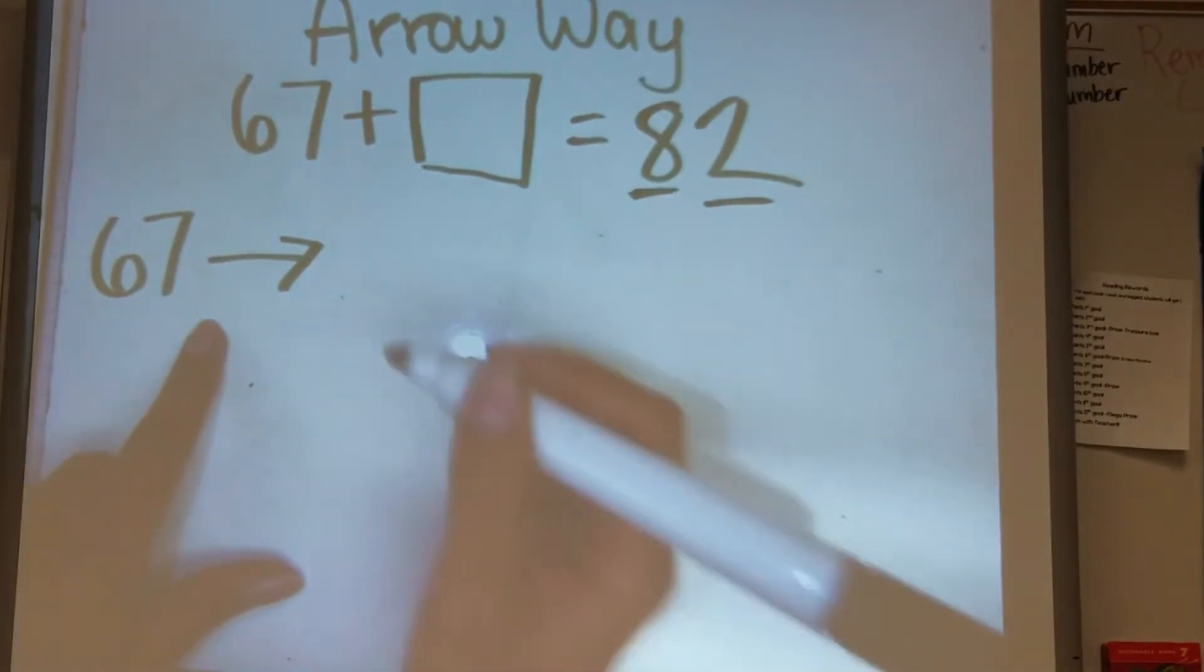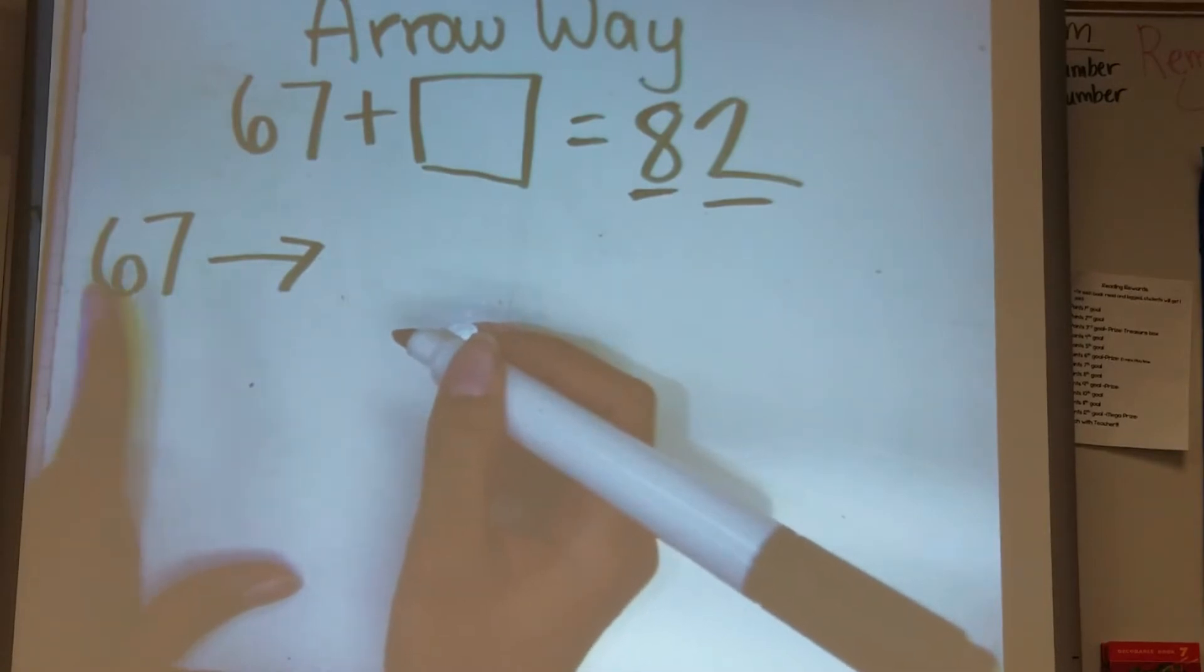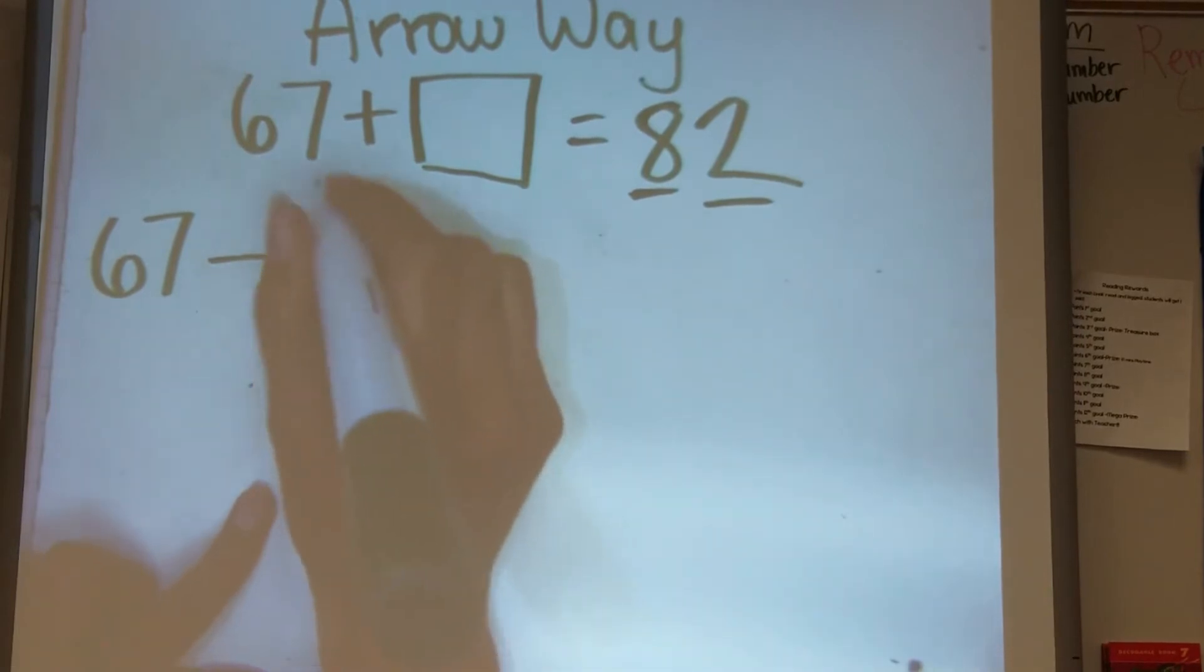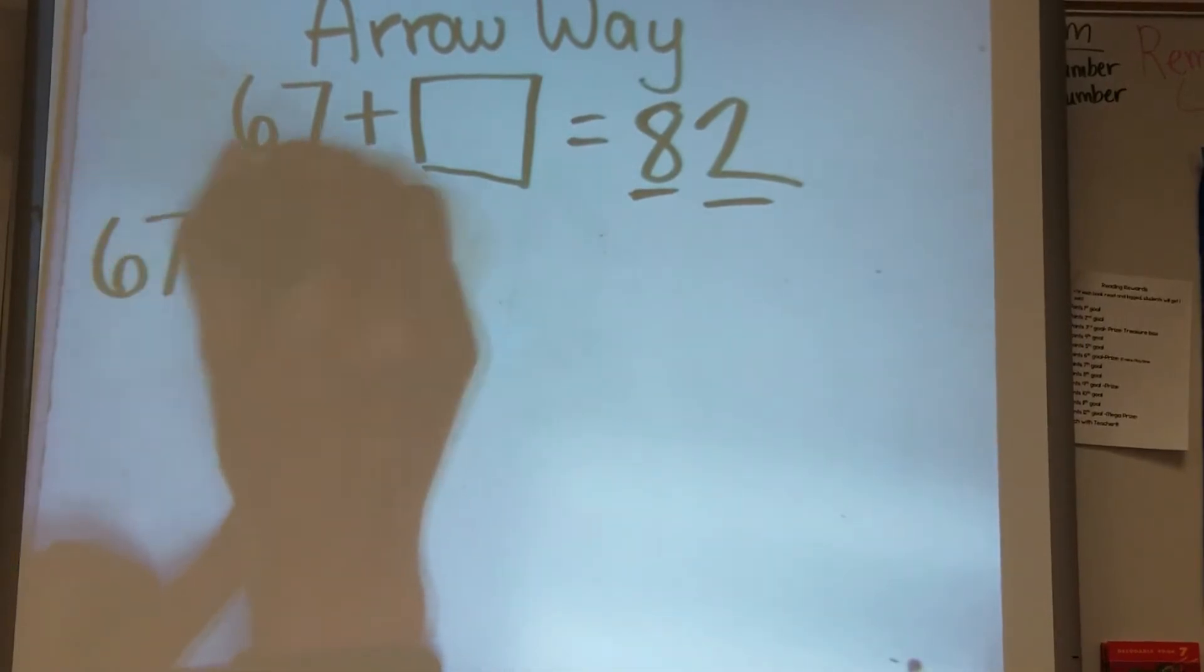And the way we can do that is by making a friendly 10. We know that 7 plus 3 equals 10, so what we are going to do is add 3.